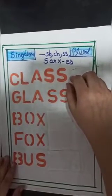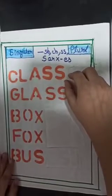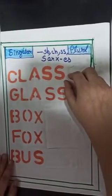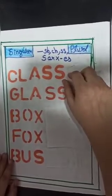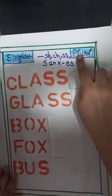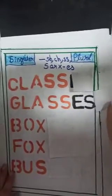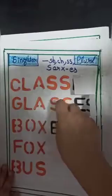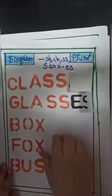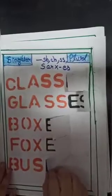Rule number 2: Adding ES to those that end with CH, SH, SS, S, or X. Plural, singular. Class, classes. Glass, glasses. Box, boxes. Fox, foxes. Bus, buses.